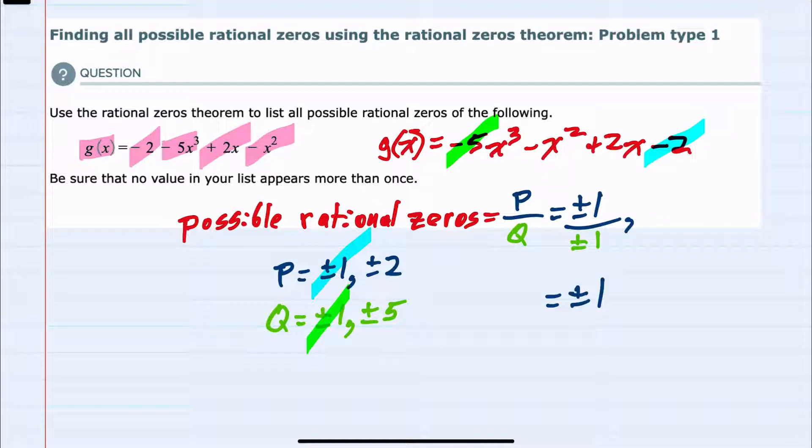And then if we kept that same p value, ±1, it could be over the other q, which is ±5. So simplifying that fraction, ±1 over ±5 is ±1/5.